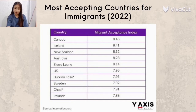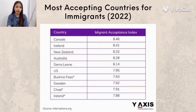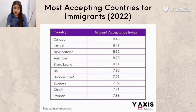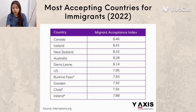This is the most accepting countries for immigrants in 2022 from internations.org. Namunguna ang Canada, followed by Iceland, then New Zealand, sumunod ang Australia, and so on and so forth.